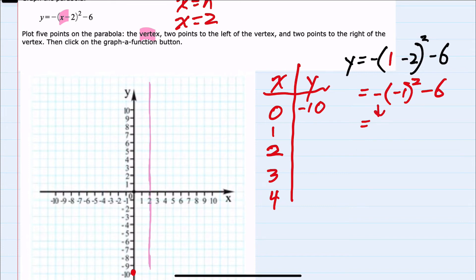But we bring down this outside negative. Negative one minus six. Negative seven. So we have our second point. When x is one, y is negative seven.